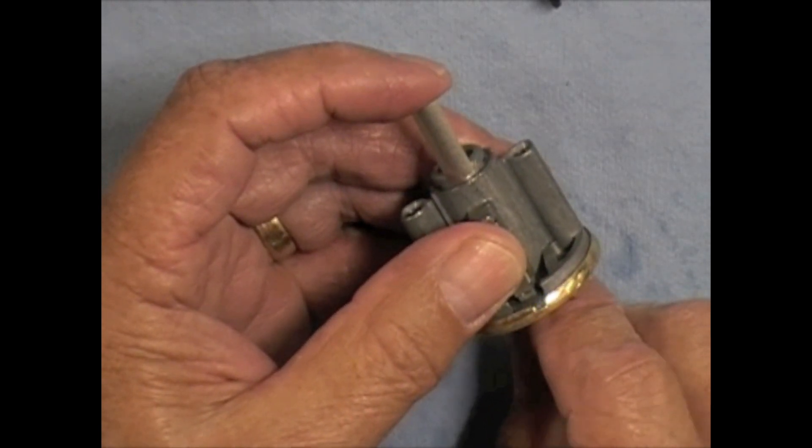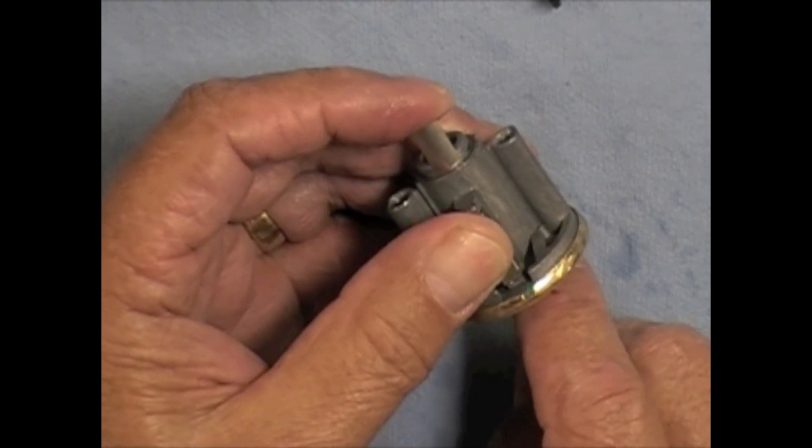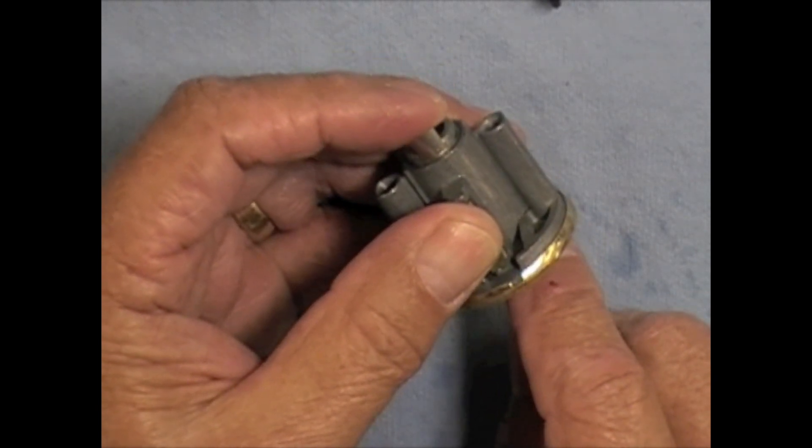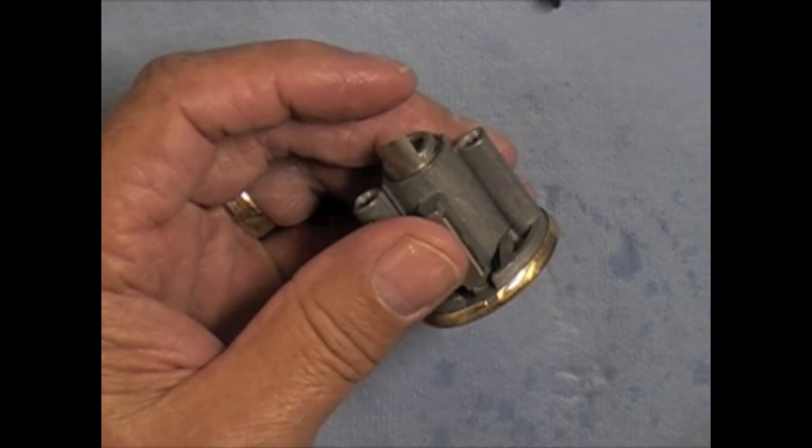It moved again so we got the number four. There's a three. There's a two. There should be just one left. This is a five pin lock. And there we saw it slide in. So we raked all five of the pin stacks.